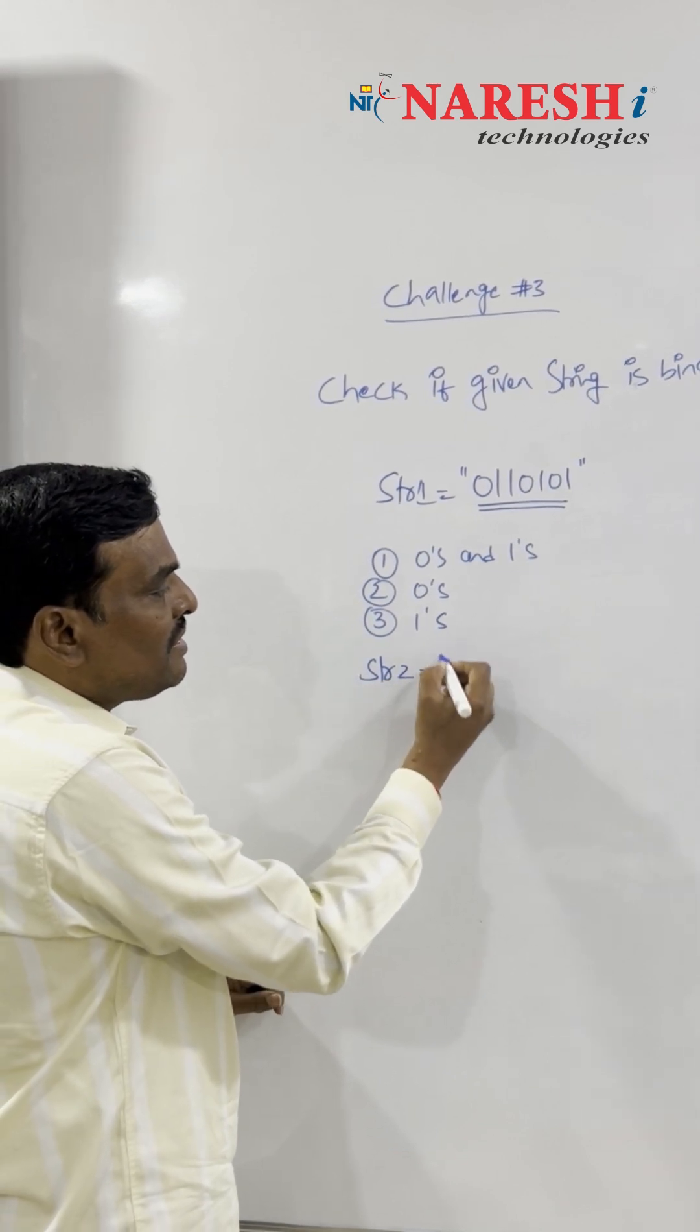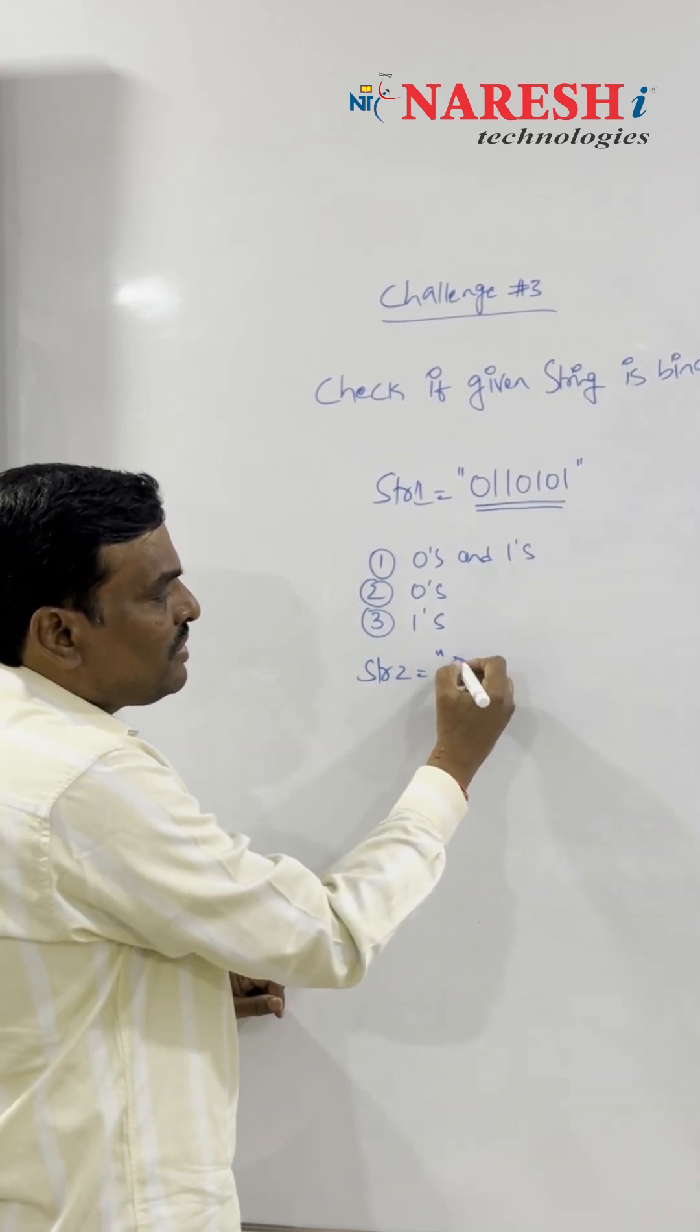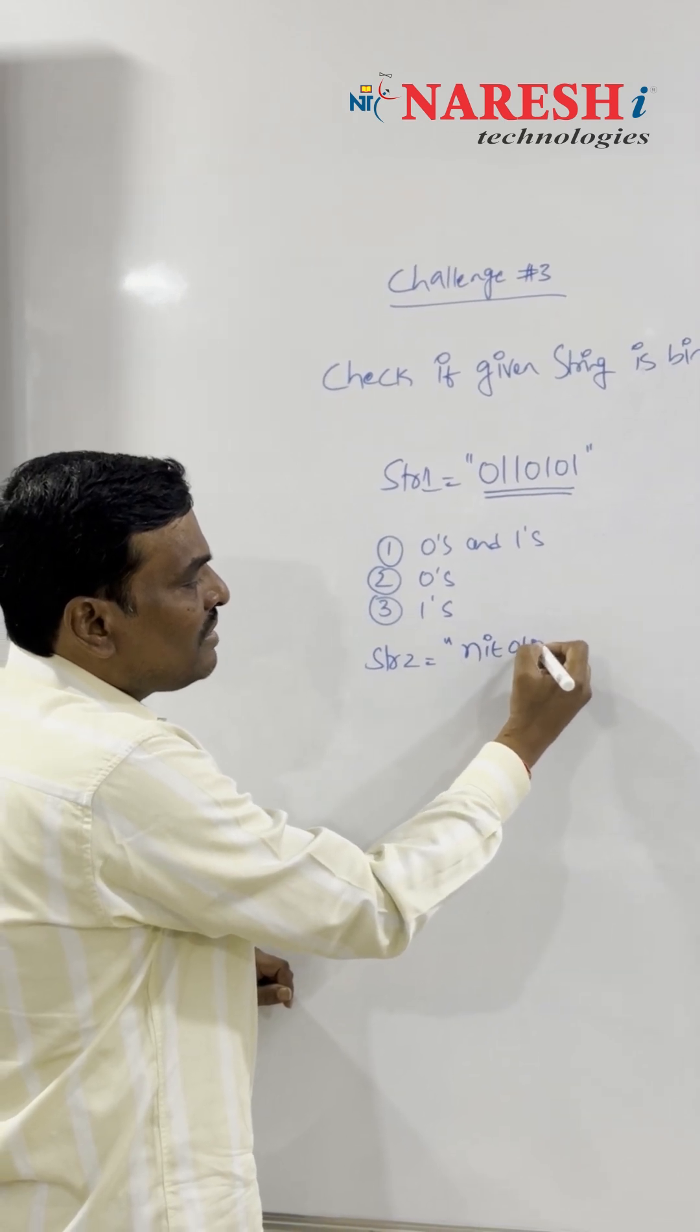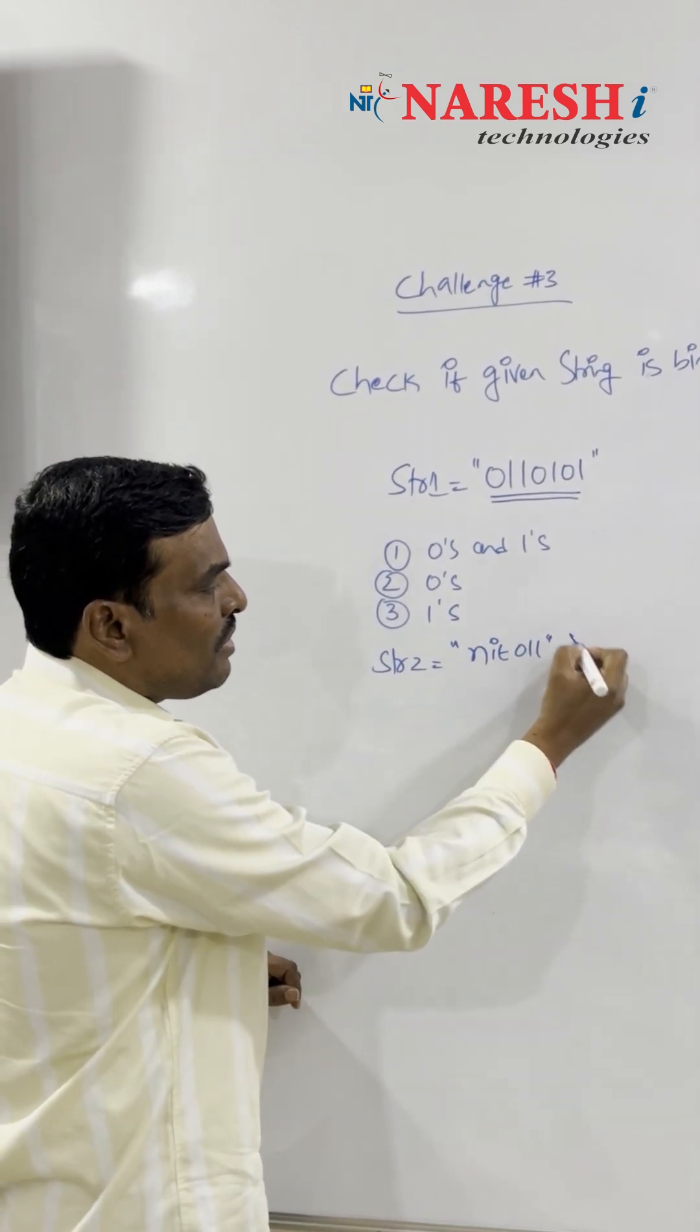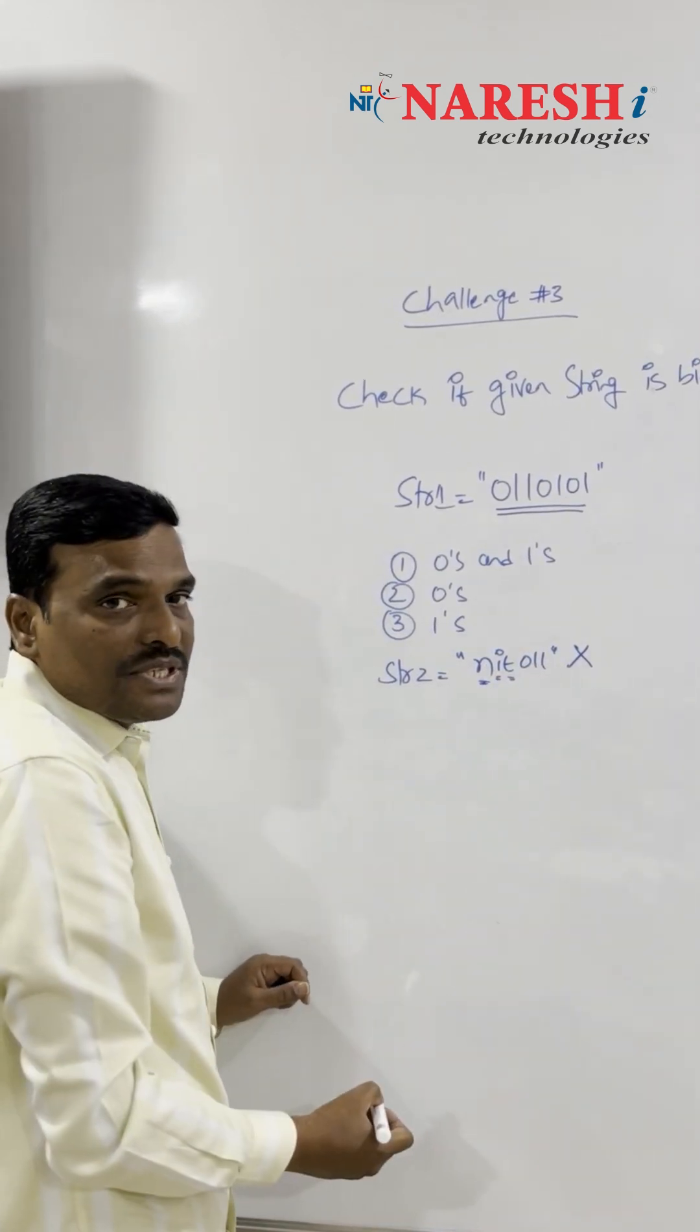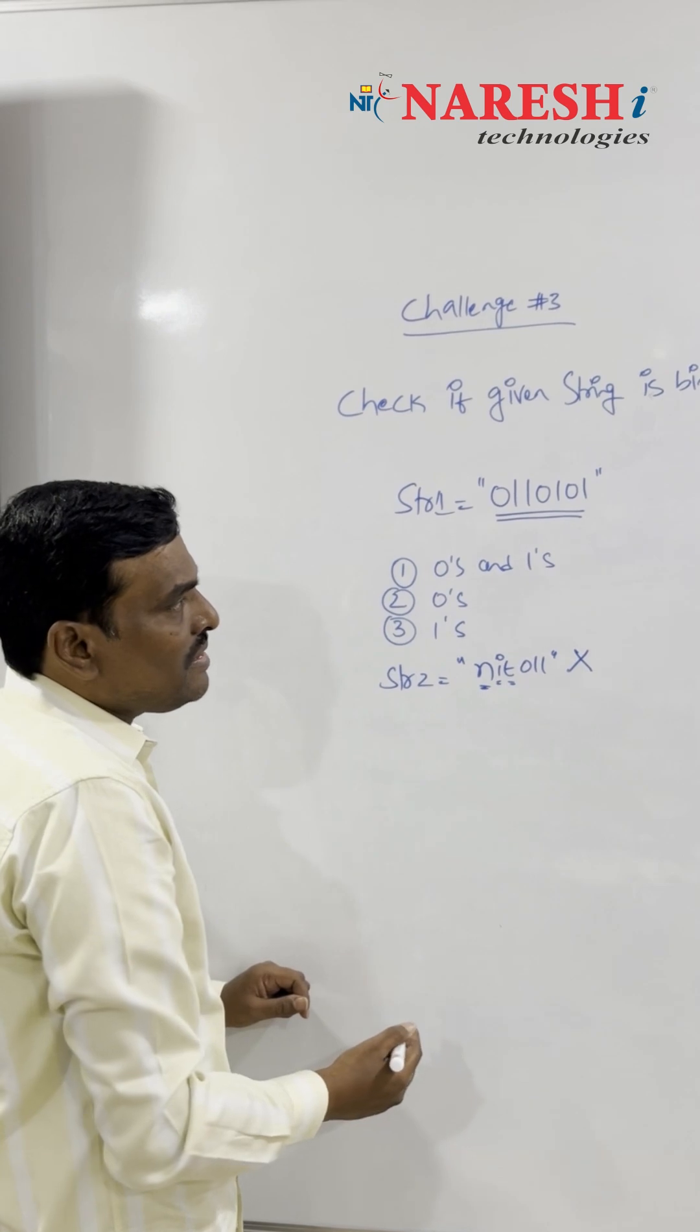Suppose I'm writing N-N-I-T, zero one one. This is not called a binary string because it consists of alphabets. Now let us see how to solve this problem.